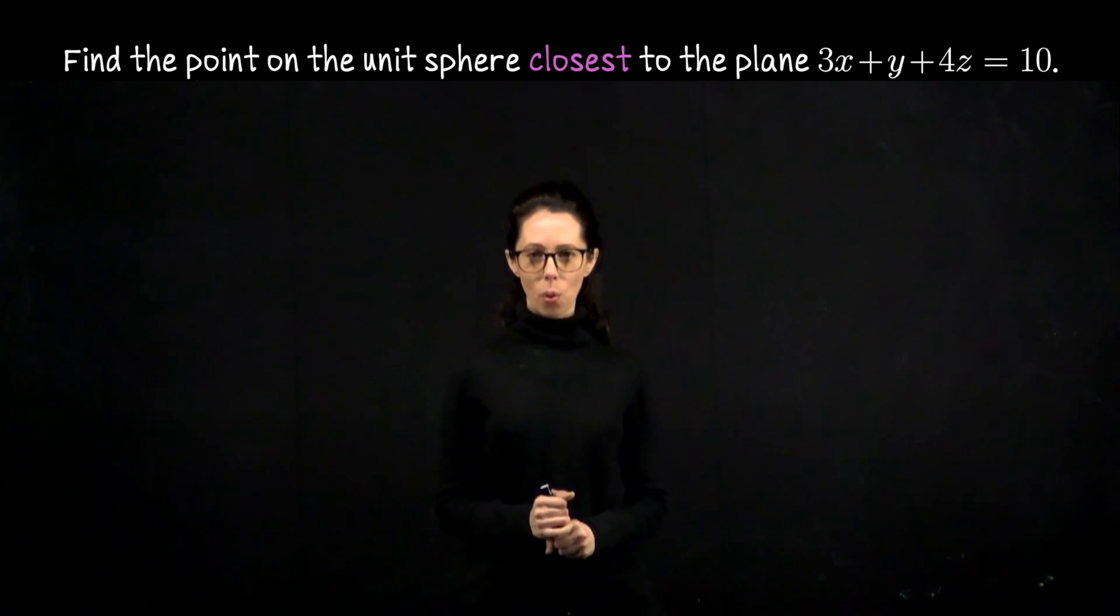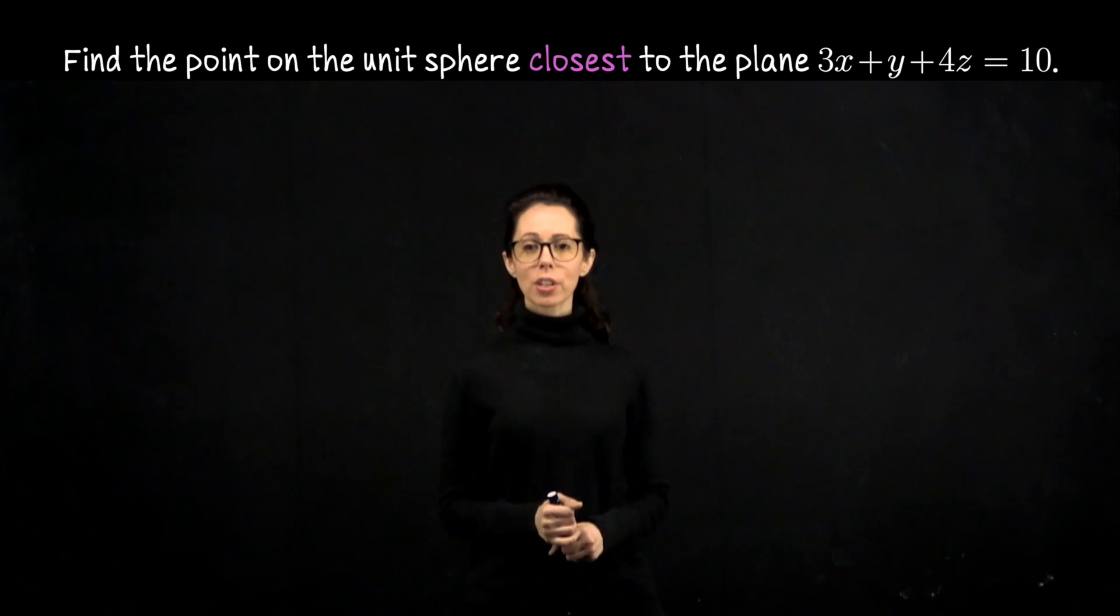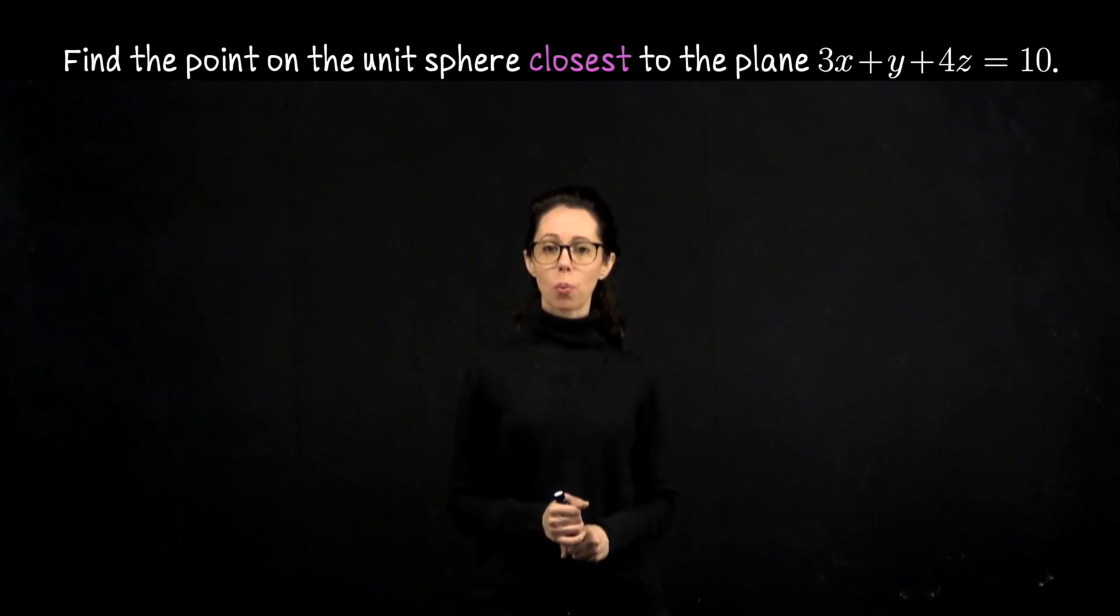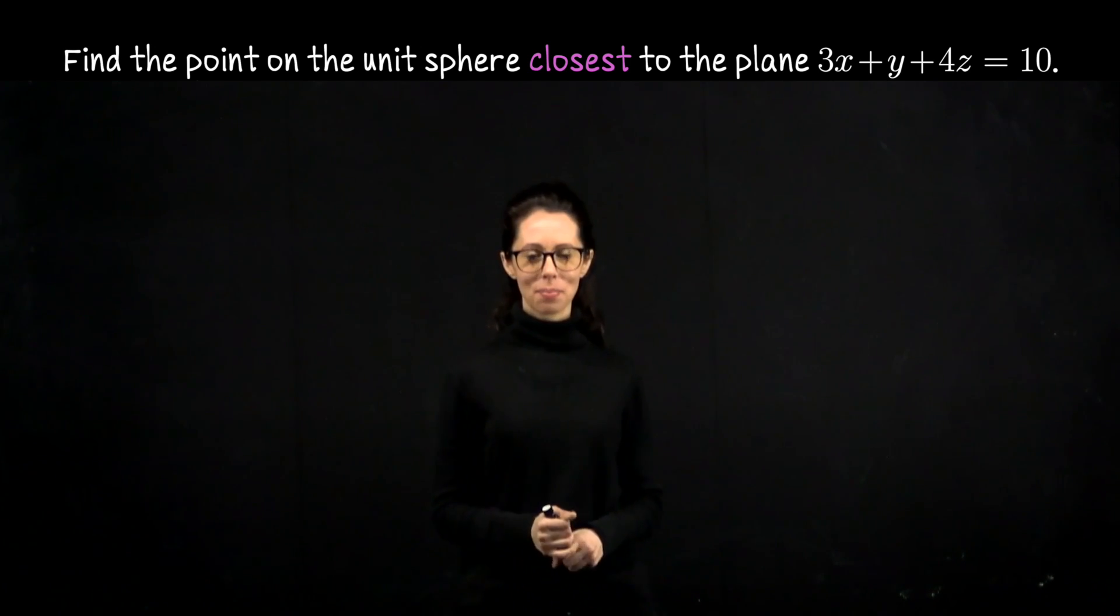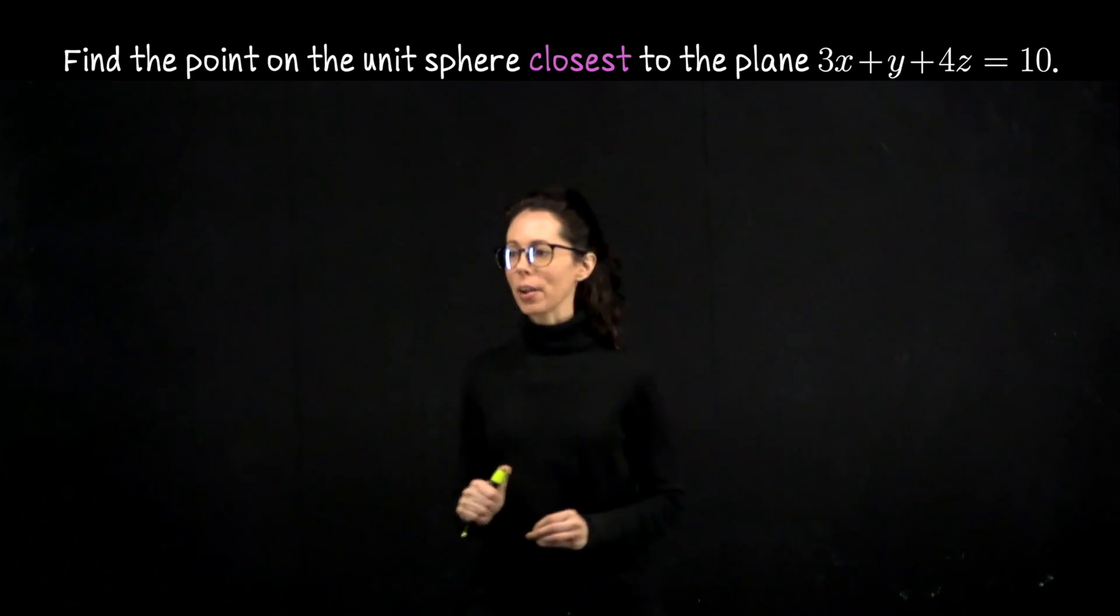In this exercise we would like to find the point on the unit sphere which is closest to the plane 3x plus y plus 4z equals 10. I would like to solve this very geometrically, so let's sketch a diagram first.